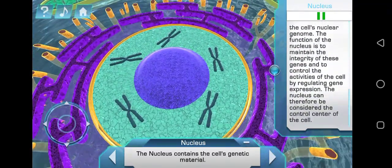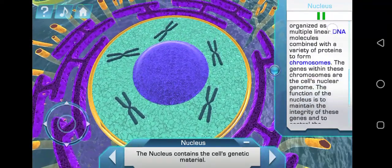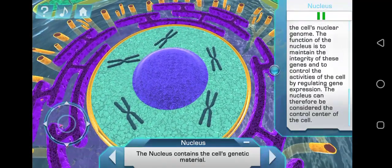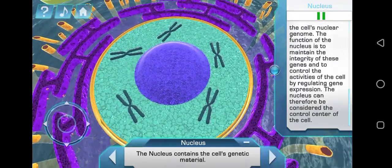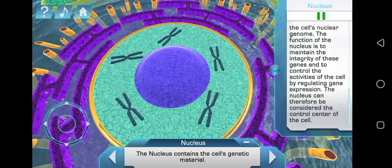The genes within these chromosomes are the cell's nuclear genome. The function of the nucleus is to maintain the integrity of these genes and to control the activities of the cell by regulating gene expression. The nucleus can therefore be considered the control center of the cell.